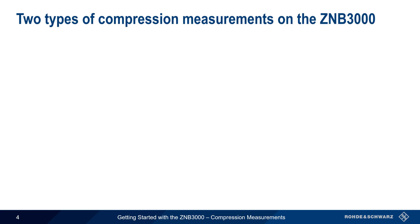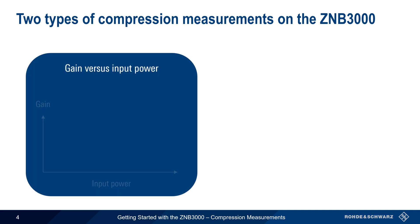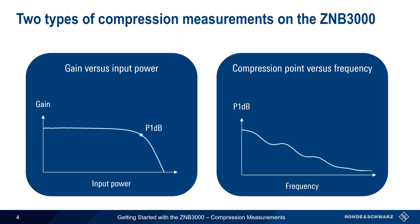Two types of compression measurements are supported on the ZMB3000. The first is the standard gain versus input power measurement, made at a user-defined fixed frequency. Generally speaking, these types of gain compression results will have a shape similar to the one shown here. The other type is a 2D measurement showing compression point as a function of frequency. It's not uncommon for a compression point to be different at different frequencies, but the shape of this curve will vary by device.